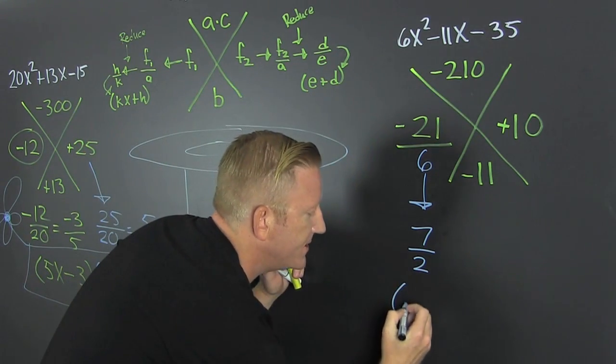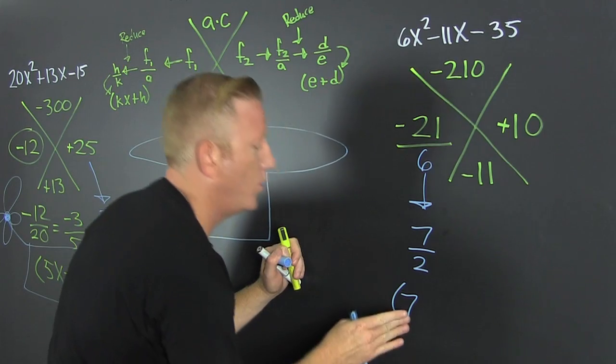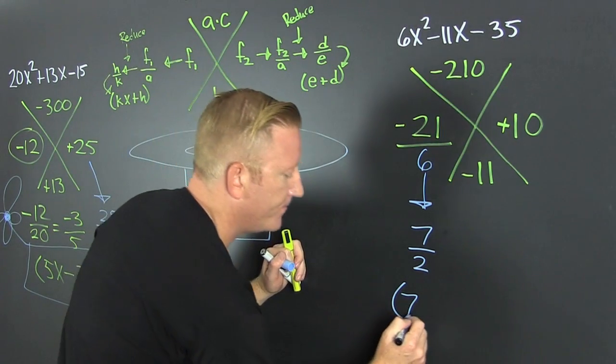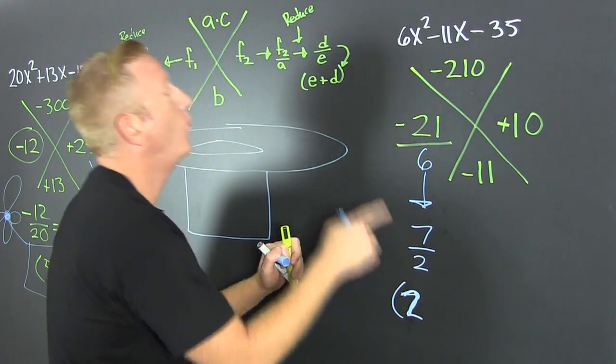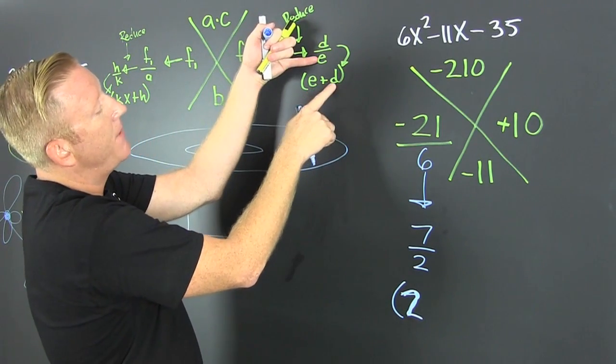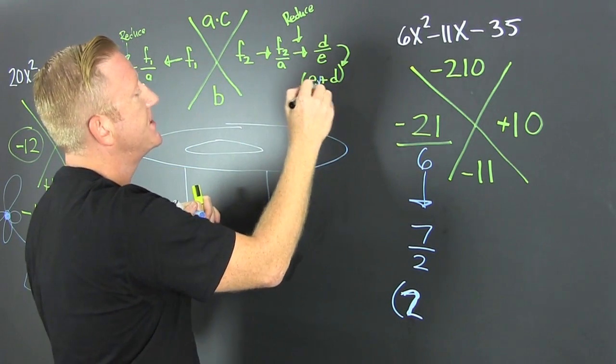That one's negative. So then this is seven. Whoa, whoa there. Back it up. That's a two. Oh, you fancy, huh? You fancy, huh? Because it's the bottom minus the top. Throw some x's in there.